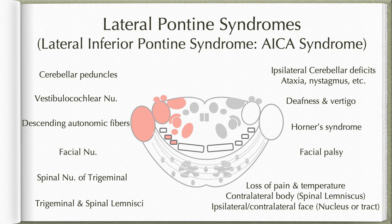When the trigeminal and spinal lemnisci are involved, there is loss of pain and temperature sensations in the contralateral half of the body and contralateral face. Involvement of the spinal nucleus of the trigeminal nerve itself results in loss of pain and temperature sensation in the ipsilateral half of the face.